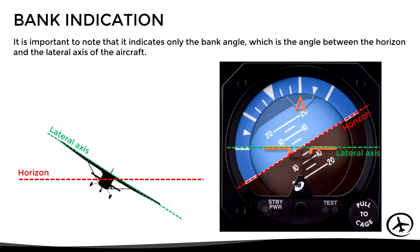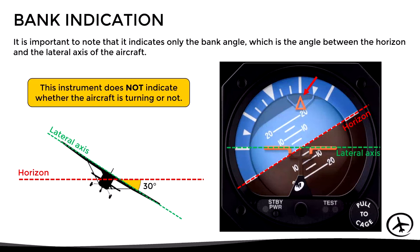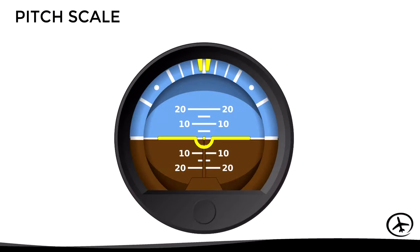In this case, the bank indicator is pointing to the third marking on the right side of the banking scale, representing a 30-degree bank to the right. It is important to bear in mind that this instrument does not indicate whether the aircraft is turning or not — it only indicates the bank angle. The instrument used to determine if the aircraft is turning and how fast is the turn coordinator.